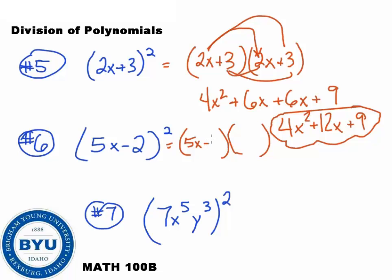With this one here, 5x squared minus 2, 5x squared minus 2. We write them out. I get 25x squared minus 10x minus 10x plus 4. Which gets us 25x squared minus 20x plus 4.